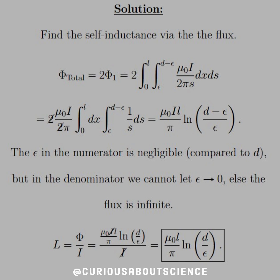Now, this being said, the epsilon in the numerator is very negligible when compared to the separation distance. But in the denominator, we cannot let epsilon go to zero in the denominator, because then we're going to get a domain restriction and an error.